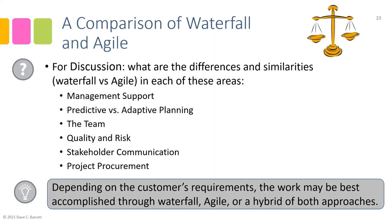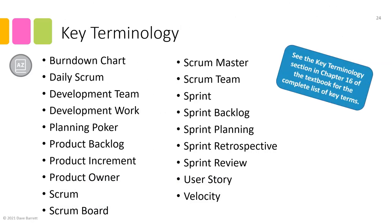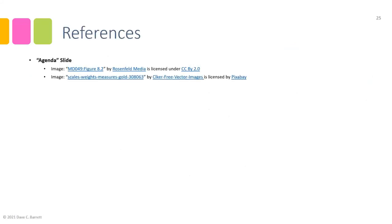There is significant key terminology covered within the agile and scrum frameworks, with many different new terms. You can find the complete list of key terms and definitions in Chapter 16 of the textbook. That is the end of the video lecture for Chapter 16: Agile Delivery.